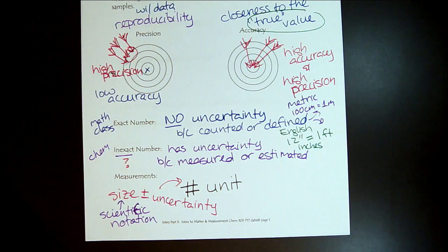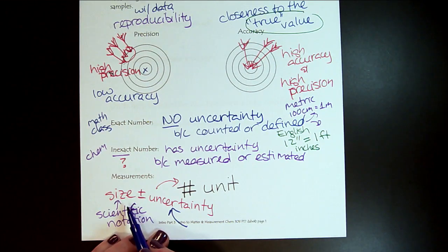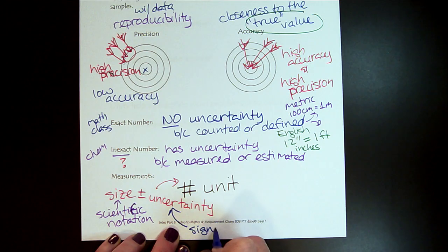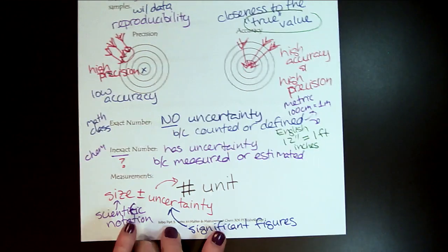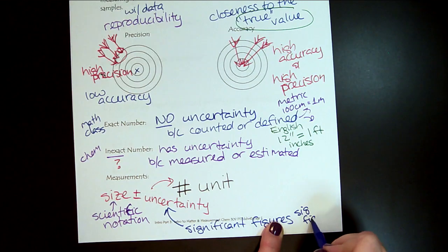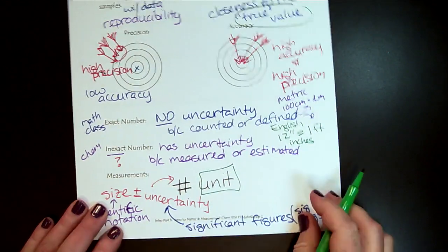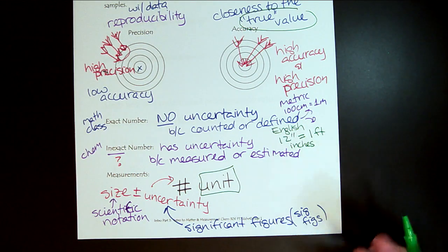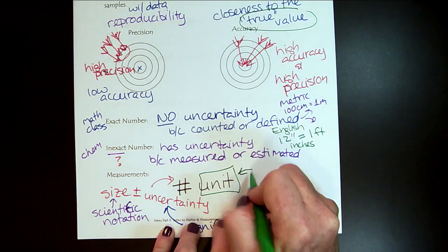For this uncertainty — to communicate whether this is a very precise number that we have a lot of confidence in, or whether it has low accuracy and low precision — we're going to need to learn about something called significant figures. Significant figures is a lot of syllables, so we'll start calling that sig figs right away. And then beyond that, we need to look at the unit, because if I say 42... 42 what? 42 feet, 42 ounces, 42 milliliters? The unit tells us what we measured.